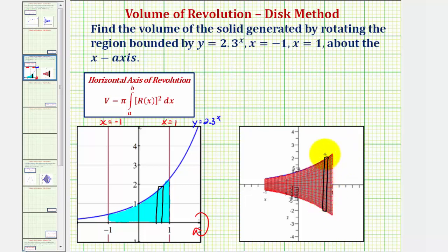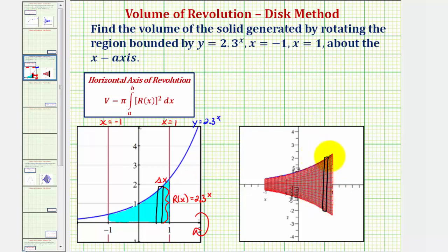Notice that the radius of this disk — our right circular cylinder — would be this length here, which we call r of x, which in this case would just be the function value 2.3 raised to the power of x. The width of the rectangle would be delta x, which, if we think of this as a right circular cylinder, would be the height of the cylinder. Because we have delta x, we integrate with respect to x, and again the radius would be the function value 2.3 raised to the power of x.